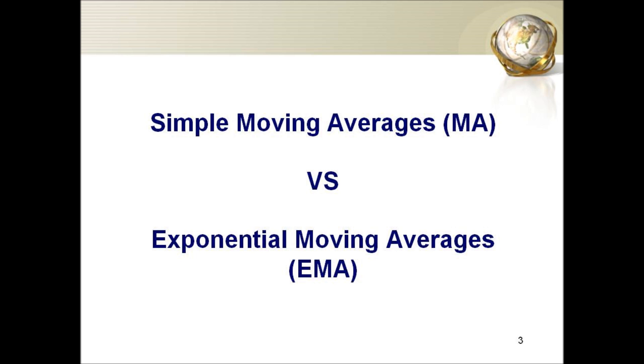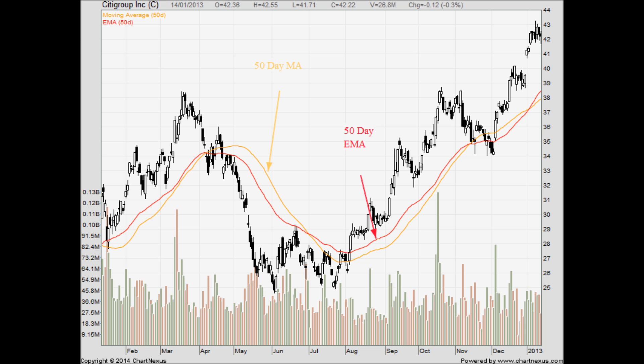There are various moving averages. The most common ones are the simple moving average and the exponential moving average. Simple moving average is calculated by averaging the historical prices. For example, a 20-day moving average will be the last 20 days' prices added together and divided by 20. A 5-day moving average will be the last 5 days' prices added together and divided by 5. The exponential moving average is calculated by giving more weight or percentage to the most recent data. Hence, the exponential moving average is much closer to the actual price line, which may generate more whipsaws or false signals than the simple moving average.